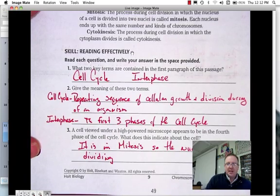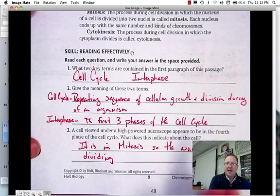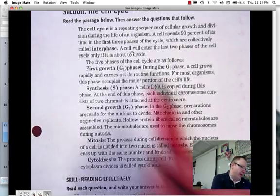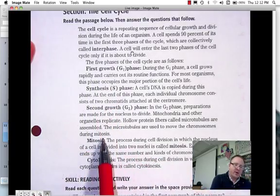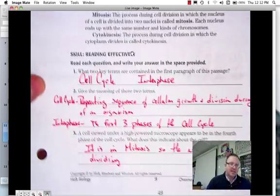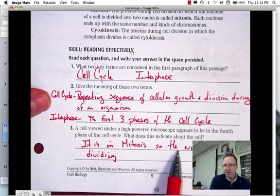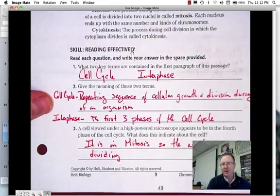And then here it says a cell is viewed under a high-powered microscope and it appears to be in the fourth phase of the cell cycle. What does that indicate? If we go back up here, the fourth phase, we have first, second, third, fourth. If the fourth phase is mitosis, so we would say it's in mitosis, and if you read through about mitosis, that would mean the nucleus is actively dividing.